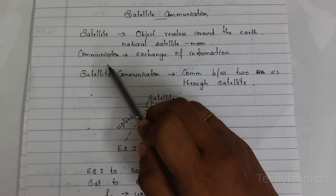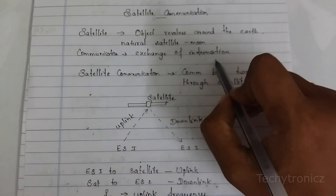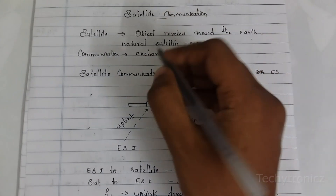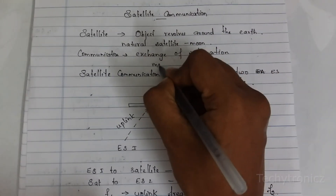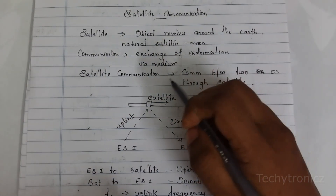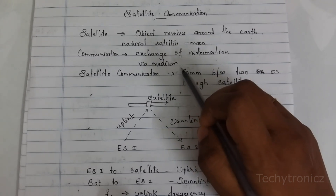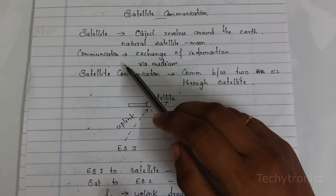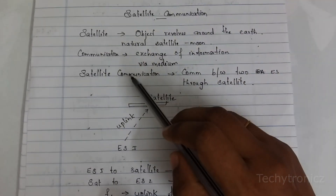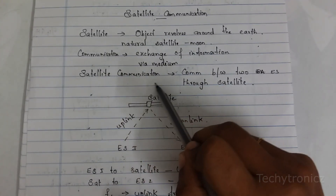Next, communication. What is communication? Communication is the exchange of information. We are exchanging information through some medium. So in satellite communication, we exchange the information through the wireless medium. So satellite means an object revolves around the earth, and communication means exchanging information through some medium.